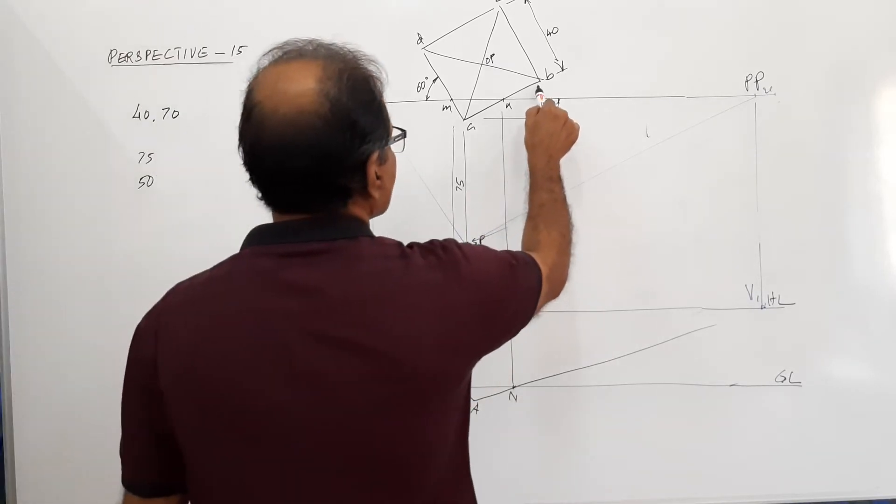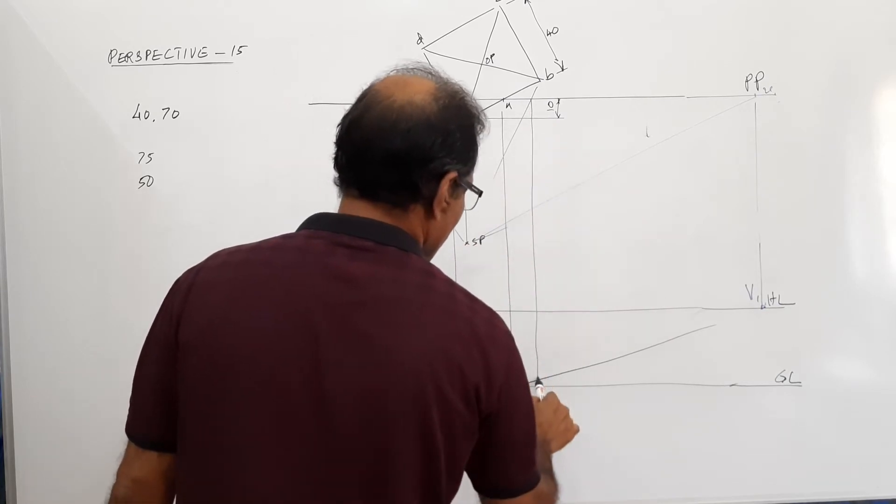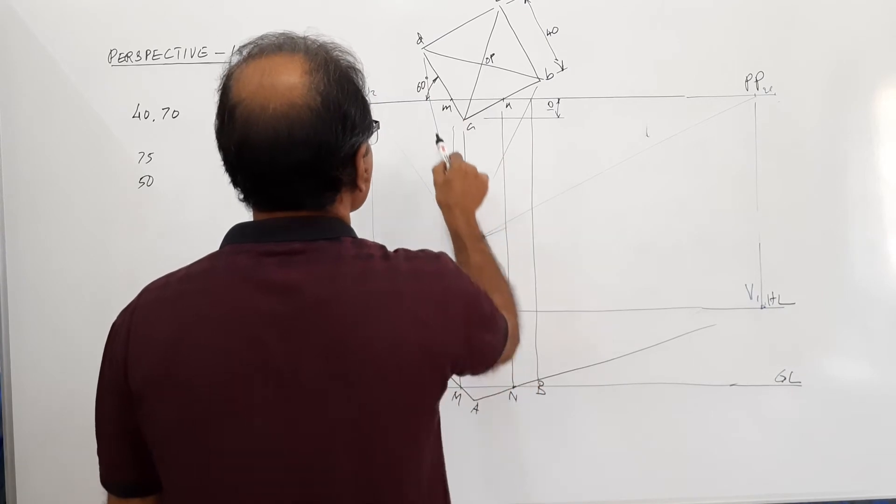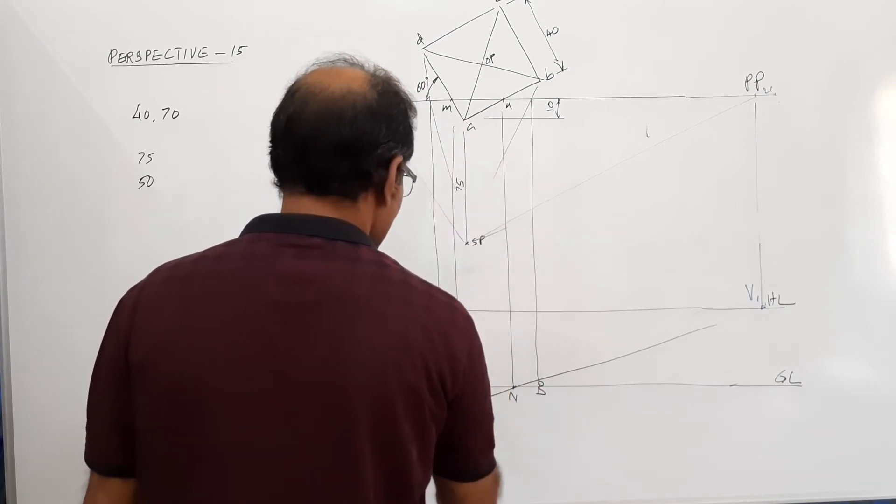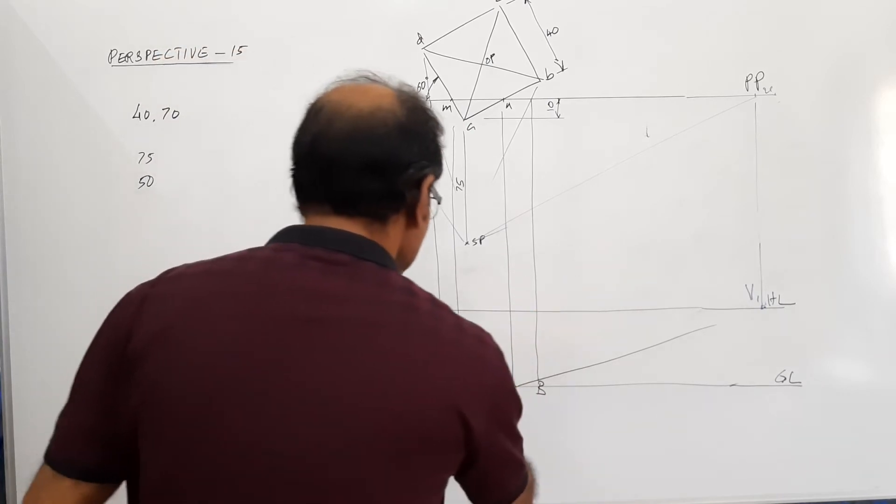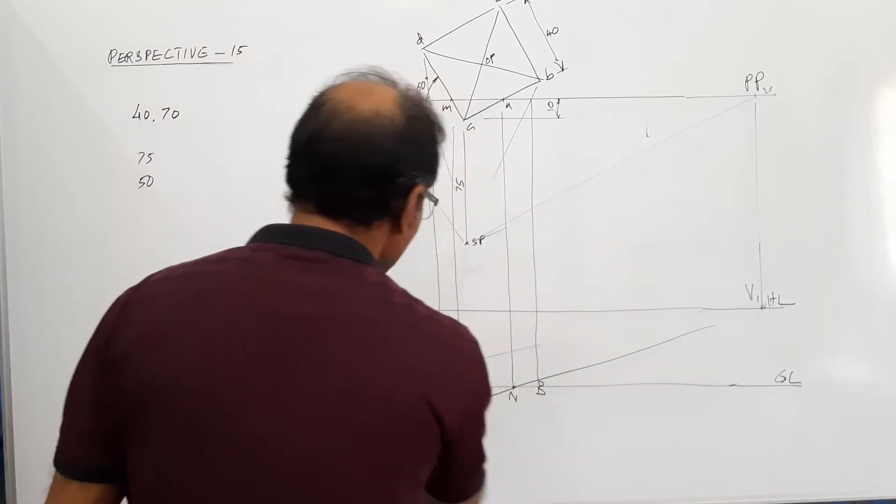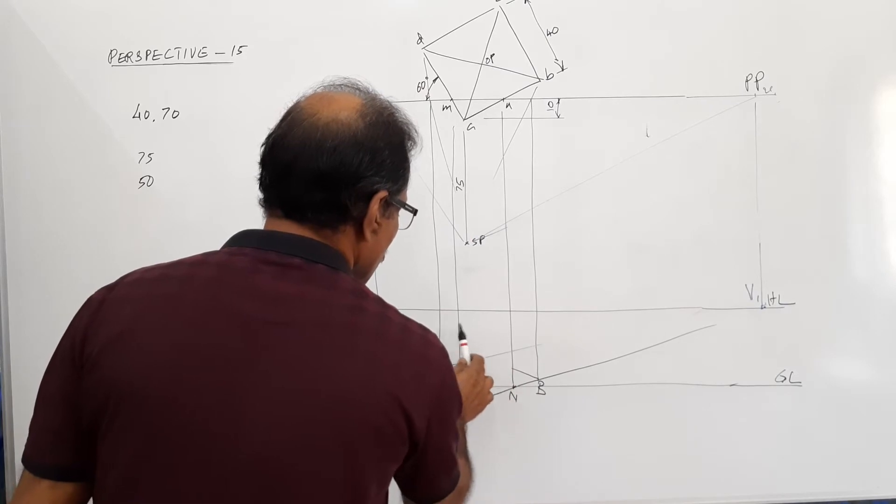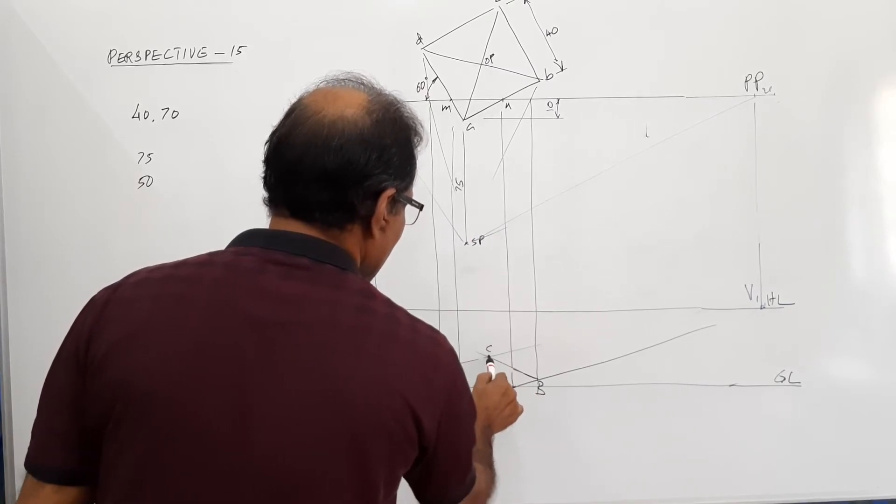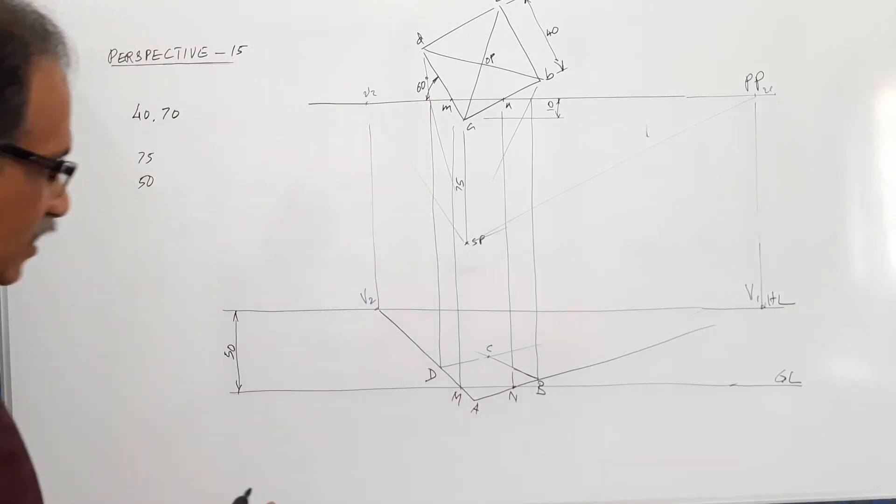Then drop the intercept of B. Drop the intercept of D. You get D. Join D to V1 and B to V2. Then cut at C. What do you get?